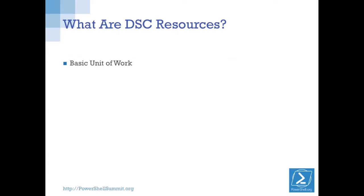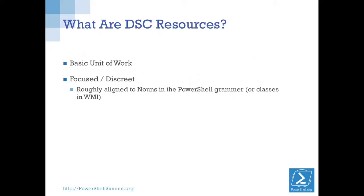DSC resources are the basic unit of work for Desired State Configuration. This is what represents the elements of what we will manage. In PowerShell, we have nouns and verbs. In Desired State Configuration, we tend to align our resources around what we think of as the nouns — or particular WMI classes. We want to be very discrete about what we build, because just like in the PowerShell pipeline where commands build on each other, in Desired State Configuration our configuration documents build on the resources. We want our resources to be very fine-grained, very low-level — these are the building blocks.